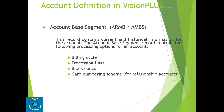After ARMN, the next is the ARMB or AMBS account. AMBS is the file name and ARMB is the CMS screen name. This record contains current and historical information for the account. The account base segment records control the following processing options: billing cycle, processing flags, block code, and card numbering schemes.